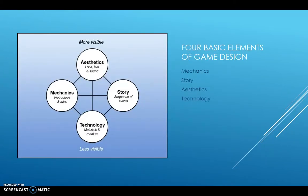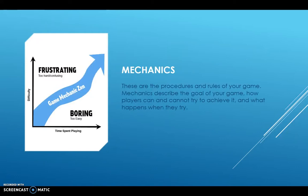The four basic elements of game design — mechanics, story, aesthetics, and technology — all come together to create the game, and they should fit into your game in equal amounts. The mechanics are the procedures and rules of your game: they describe the goal, how players can and cannot achieve it, and what happens when they try. You need to think about flow state and balance — can the player understand the mechanics, use them to move on to the next mechanics, and is the challenge always there for the player?